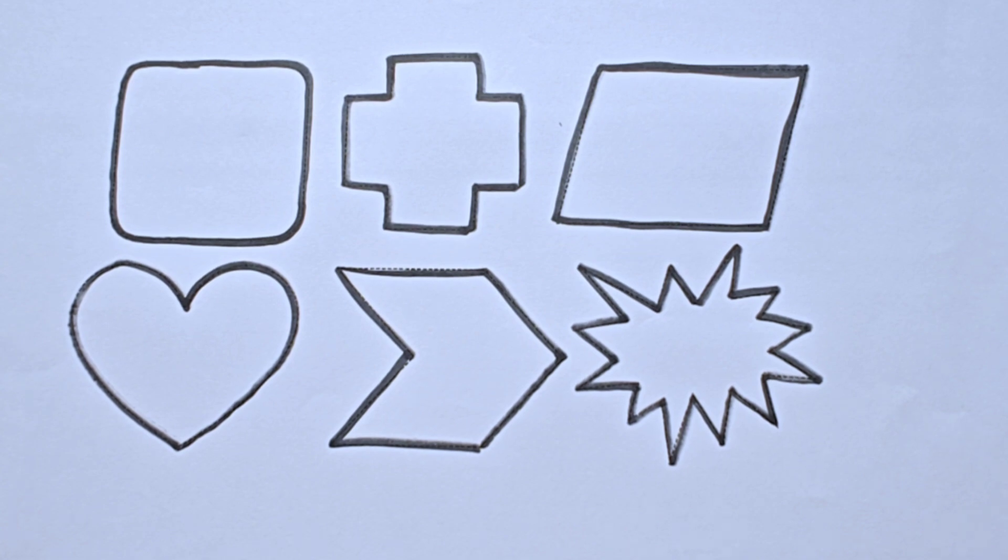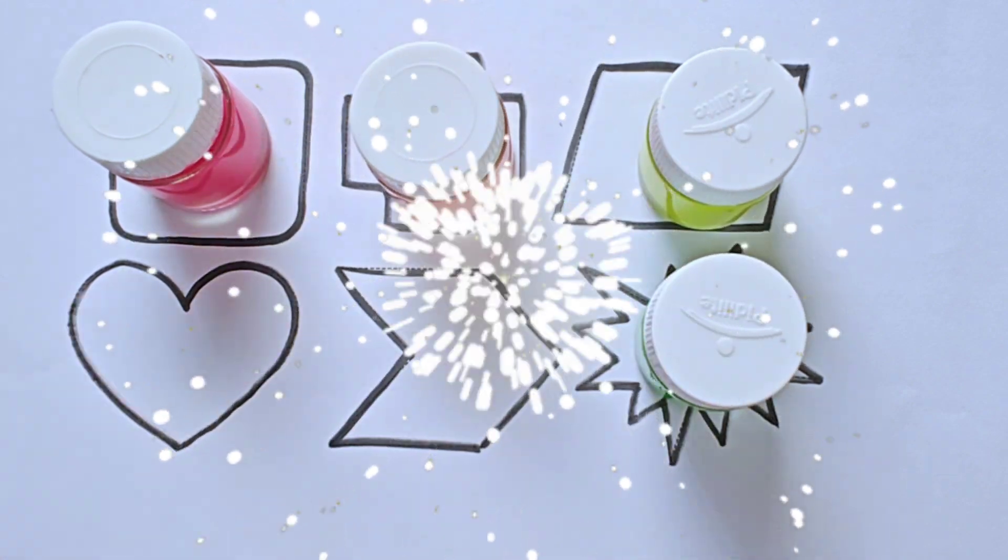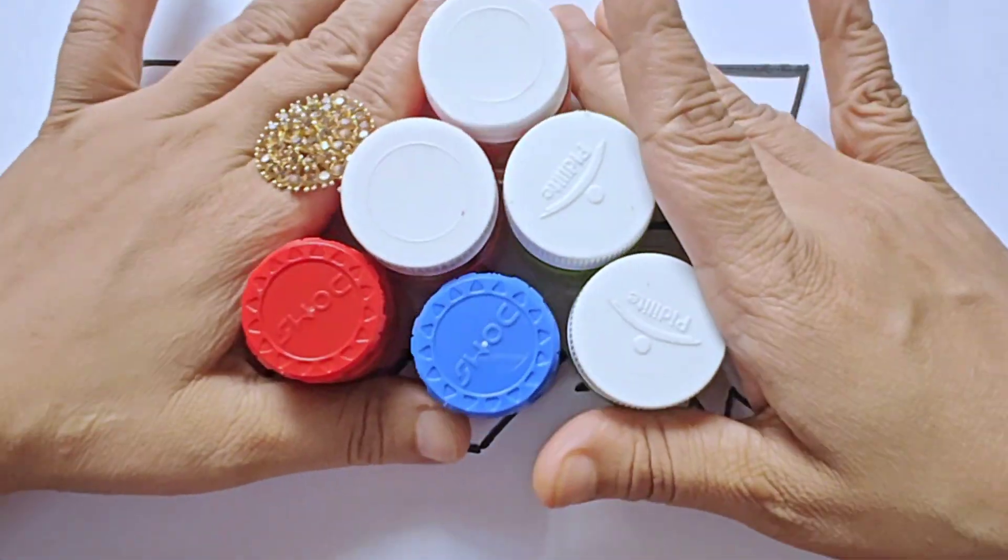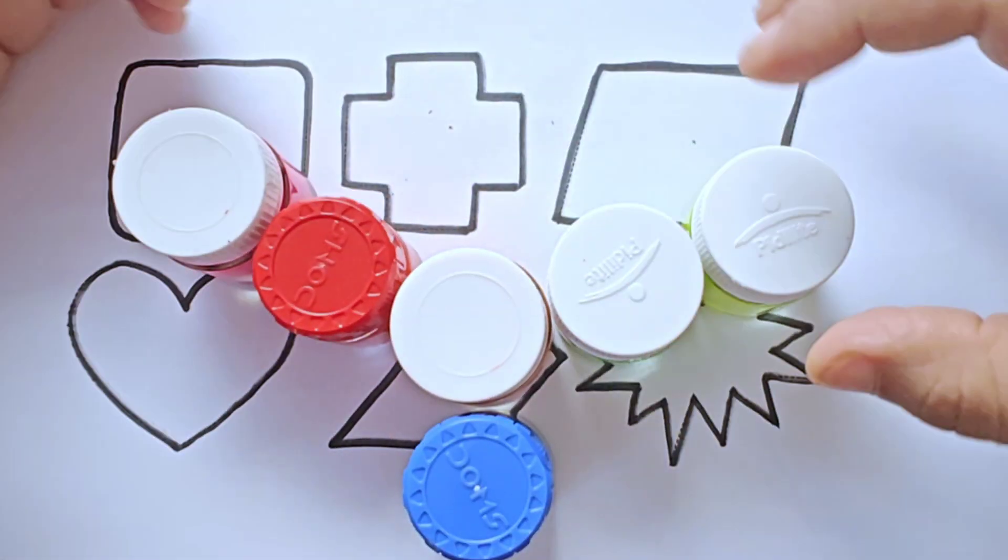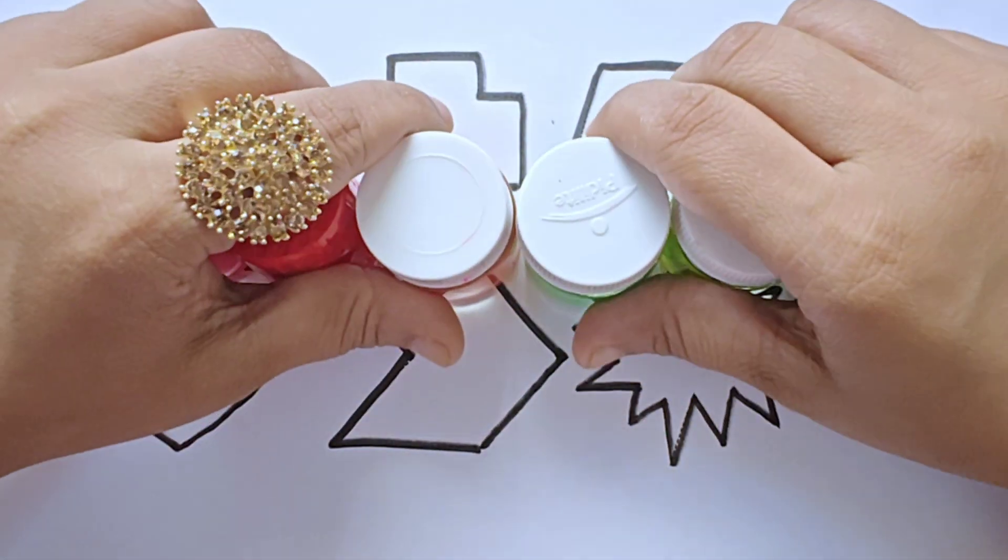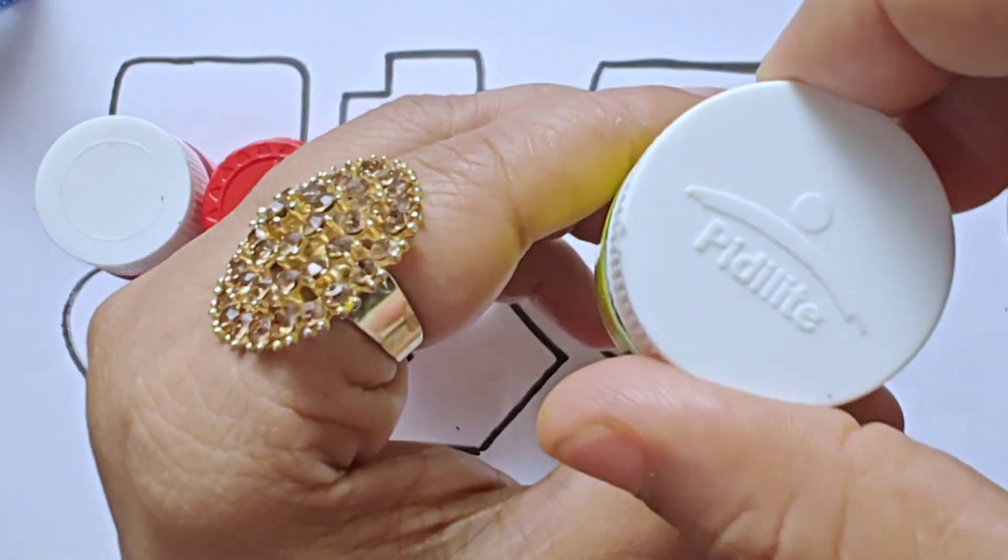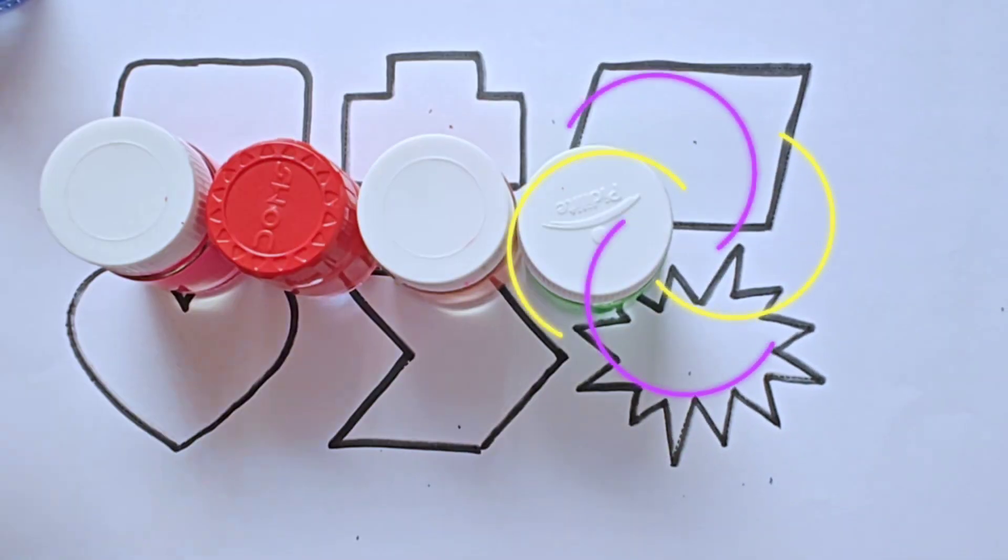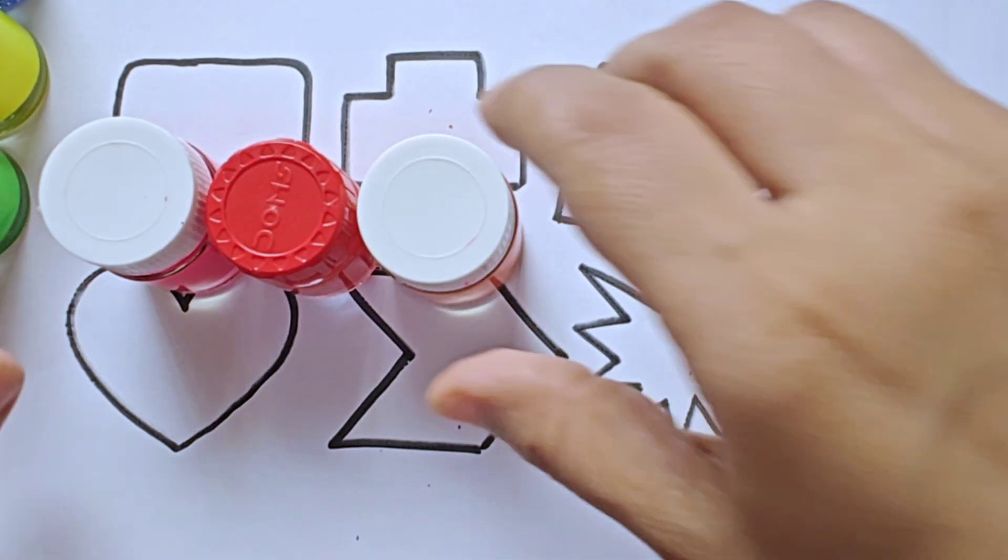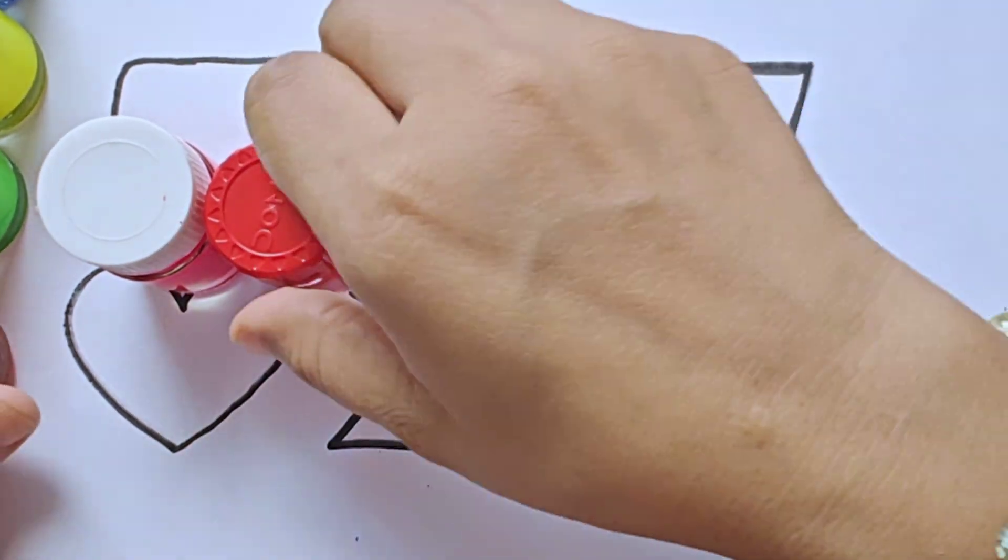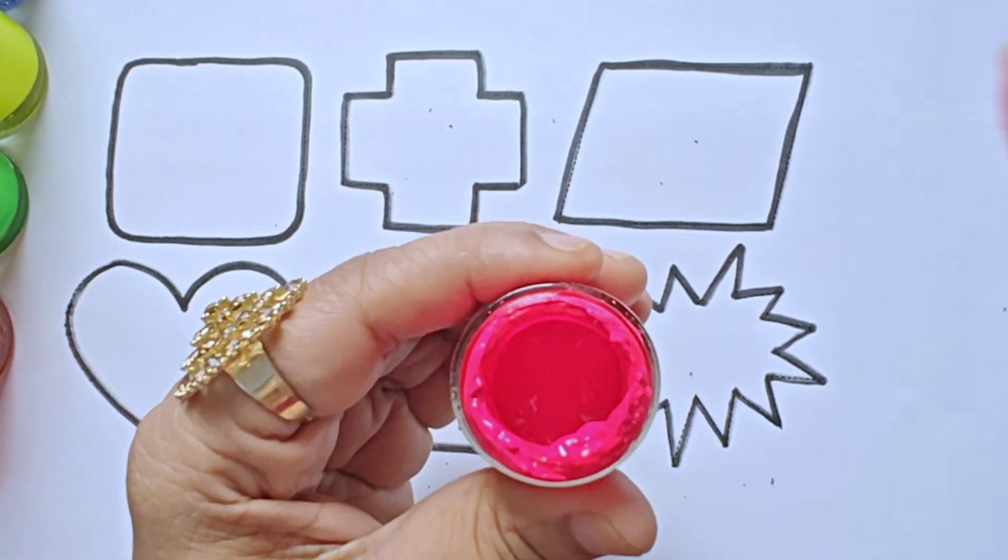Now let us know about the color name. These are our colors. It is blue color, yellow color, green color, red color. It is orange, red color, pink color.